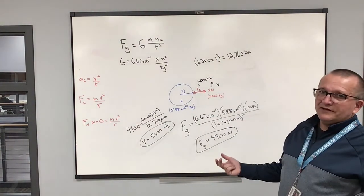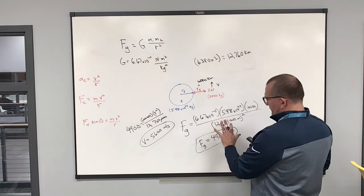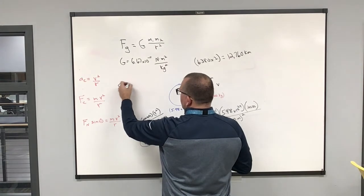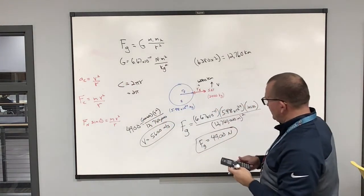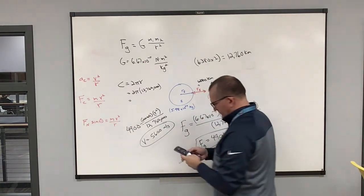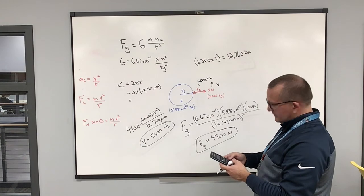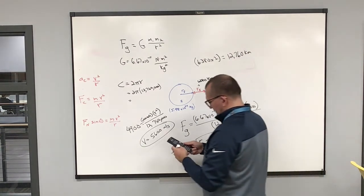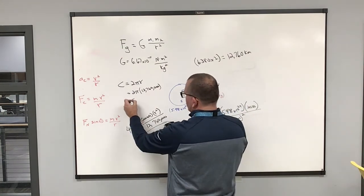It's circumference. It's going to be, so our distance around is going to be 2 pi r. So, 2 pi times this number, 12,760. So, 2 shift pi, 2 pi times 12,760, 1, 2, 3. It gives me a huge number of 8, 0, 1, 7, 3, 4, 4, 4. So, 80 million. That's my circumference.